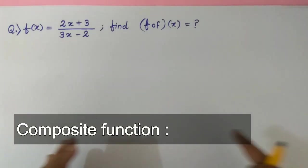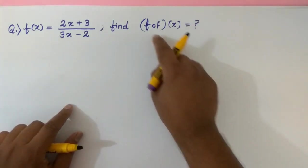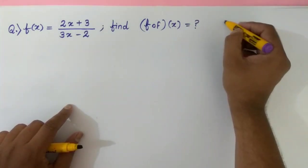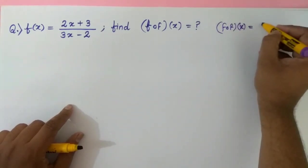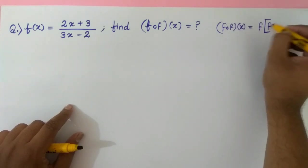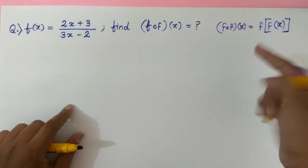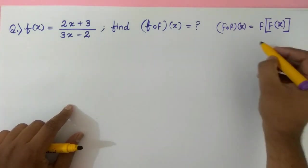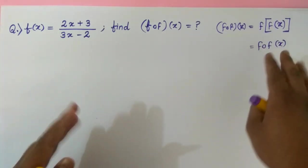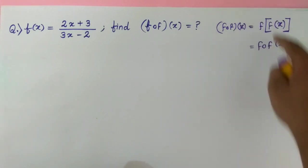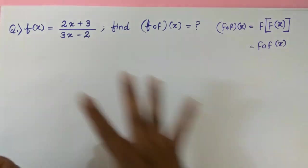Welcome to Mandan Academy. This is a concept of composite function. There are various notations about this: f of f of x is also equal to f of f of x, sometimes it is also written as f of f of x. These are all three different notations but have the same meaning: composite function. Let's see how we can solve the question.